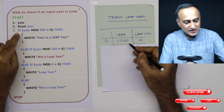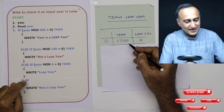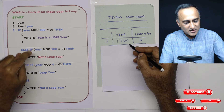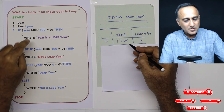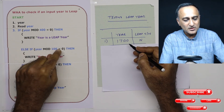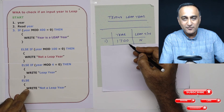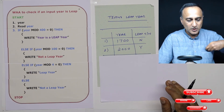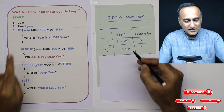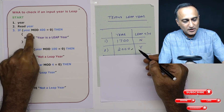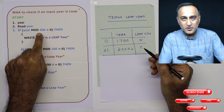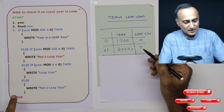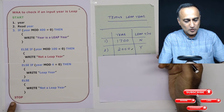You need to understand that in an if, else if, else if, and else structure, if one condition is true it will not execute the other statements at all. It will only execute the statement whose condition is true, or by default the last else statement. Now let's take the year 2000: quite simple — 2000 mod 400, the remainder is zero, so I'm going to say year is a leap year, then stop.